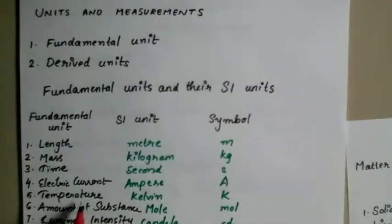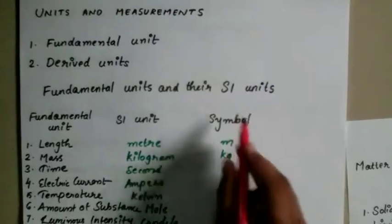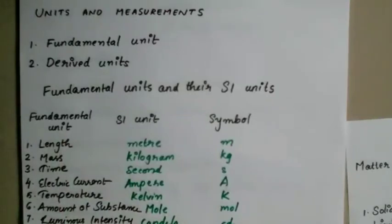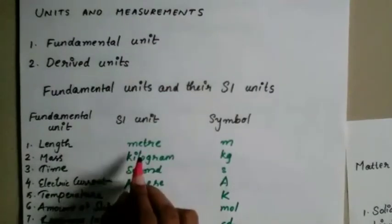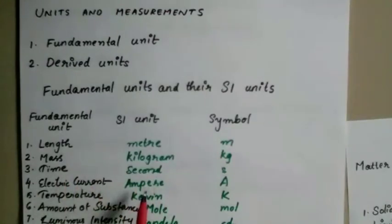Temperature has SI unit kelvin (K). Amount of substance has SI unit mol, with symbol mol. Luminous intensity has SI unit candela (cd). So the seven fundamental units are: meter, kilogram, second, ampere, kelvin, mol, and candela.